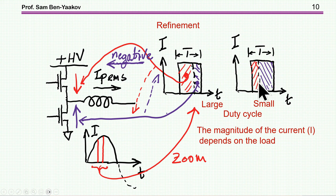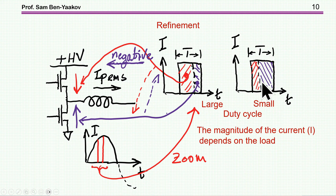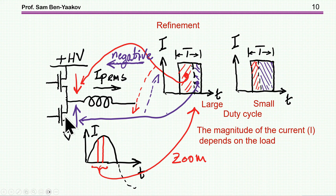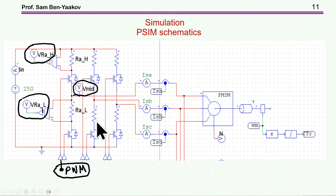On the other hand, if the duty cycle is low, we have the reverse — the upper transistor conducts for a short time and the lower transistor conducts longer. But as I said earlier, on average this evens out, and the total power can be divided equally between the two sides on average.